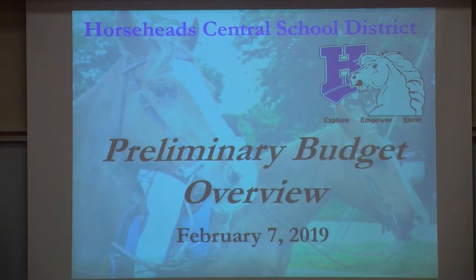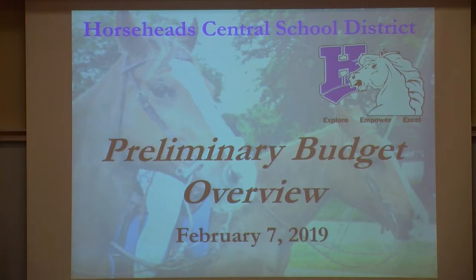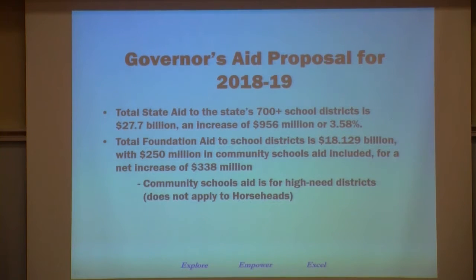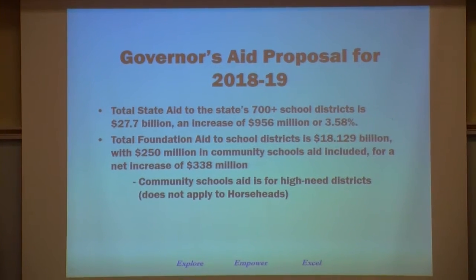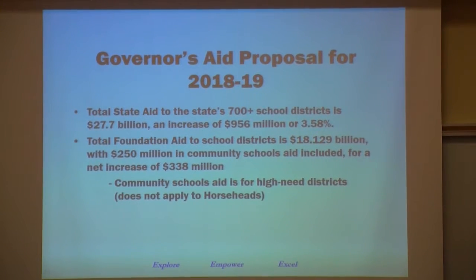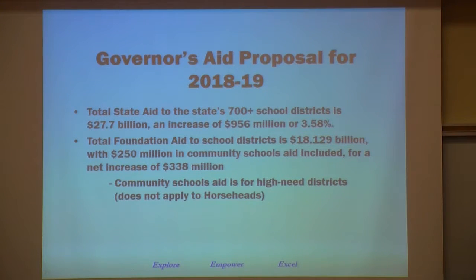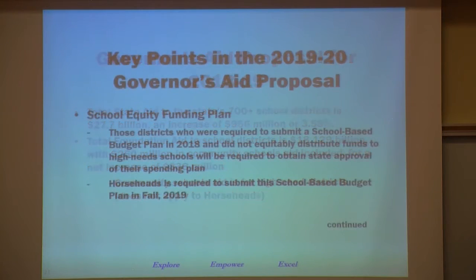Good evening everyone. Tonight we're going to do a quick rundown of the governor's proposal, what the taxes look like, and where our budget stands. The governor made his proposal a few weeks ago and is proposing to increase overall state aid by $956 million or 3.78%, increasing up to $27.7 billion. Of that, foundation aid is up to $18.1 billion, which is $338 million over last year, but they are lowering the community schools money in that foundation aid — up to $250 million this year — which we don't participate in.